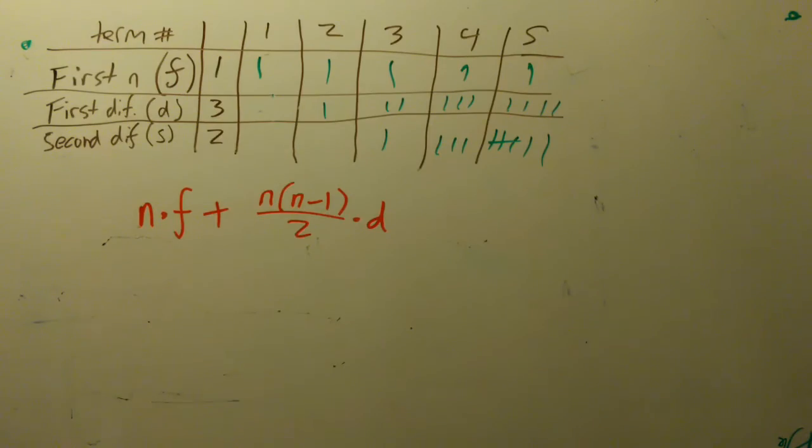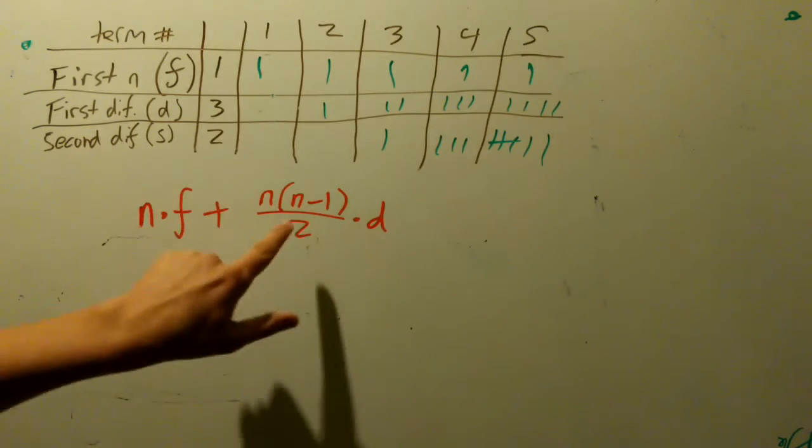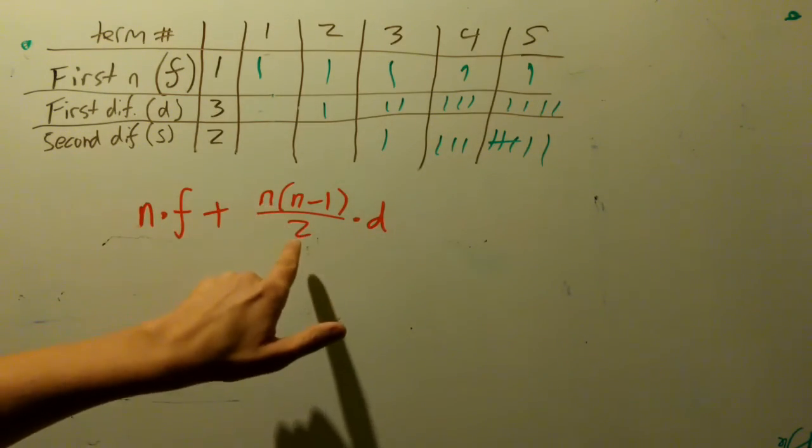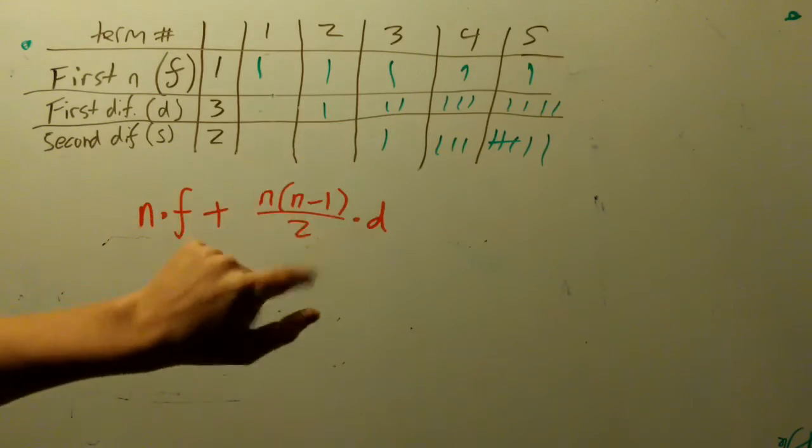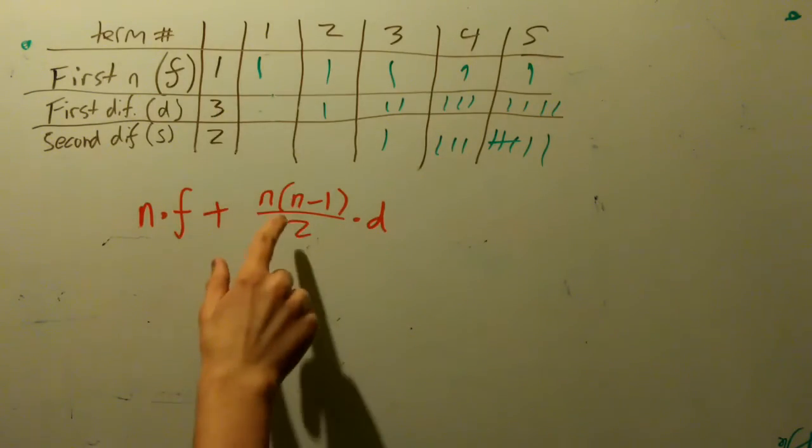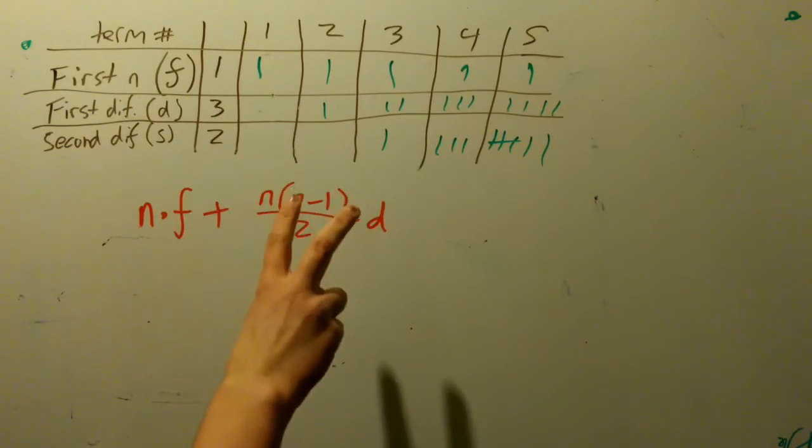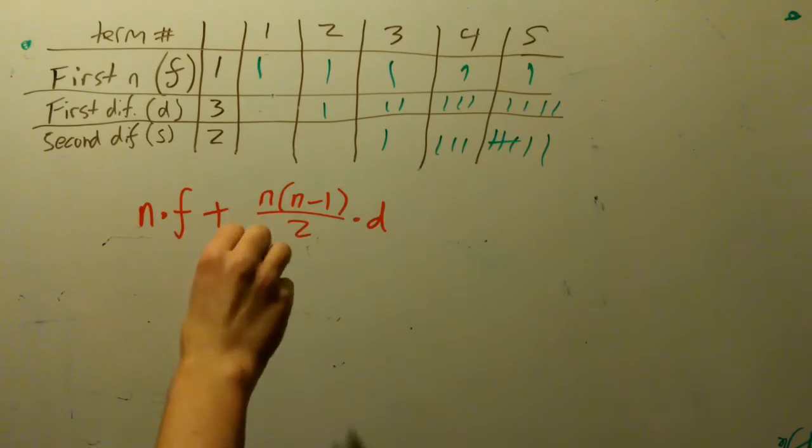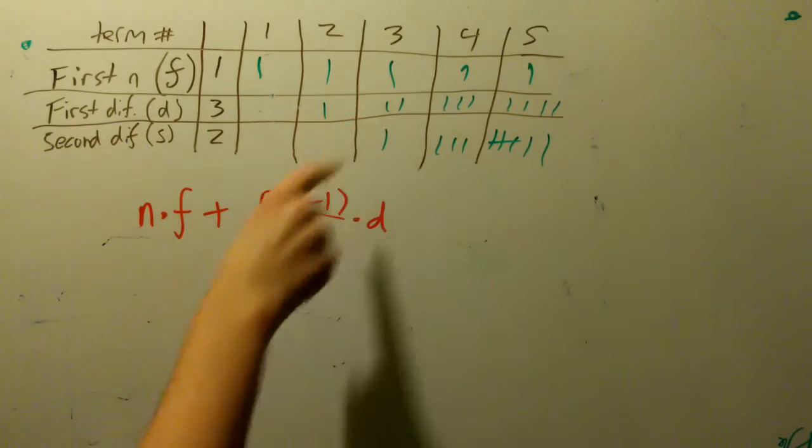So by plugging in n minus 1, the ones cross out and we get n minus 1 here times d. We can easily prove this because in the first term, there's 1 minus 1 is 0. In the second term, there's 2 minus 1 is 2, 2 over 2 is 1. In the third term, there is 3 minus 1 is 2, 2 times 3 is 6, 6 divided by 2 is 3. 1 plus 2 is also 3.